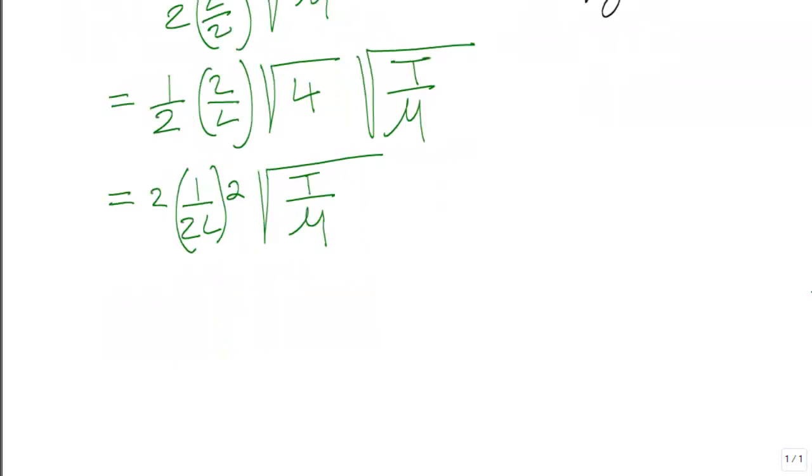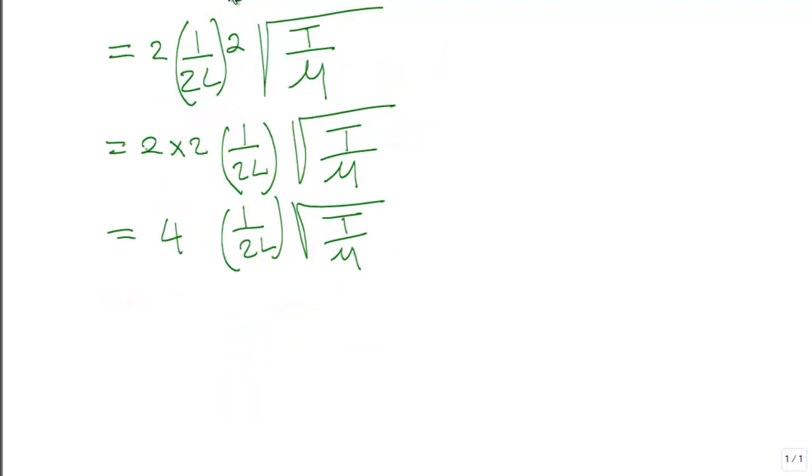From here, we see that 2 multiply 2, 1 upon 2L, root T upon mu. Now 2 multiplied by 2 is 4. So we have 4 multiply 1 upon 2L, root T upon mu. So this section right here is that equation that relates the fundamental frequency f to the tension T and length of the string. So we can easily rewrite here for f. And this is our answer.